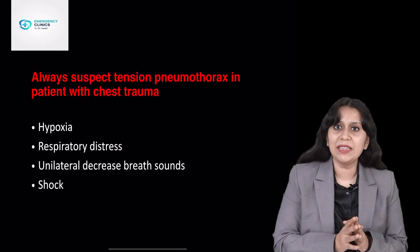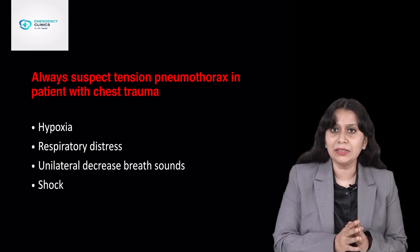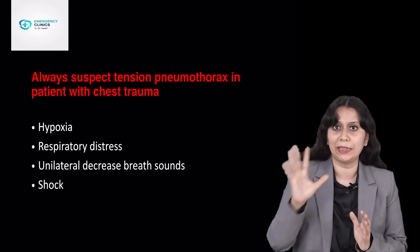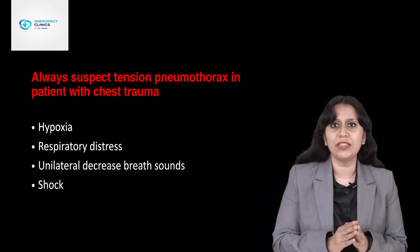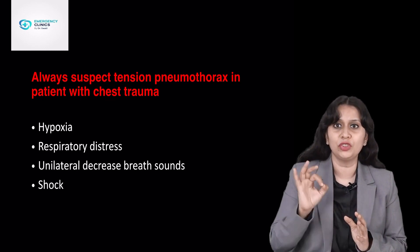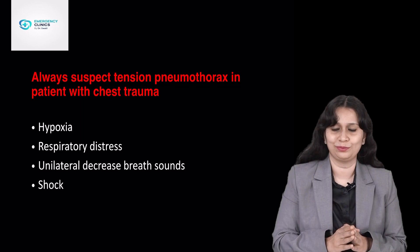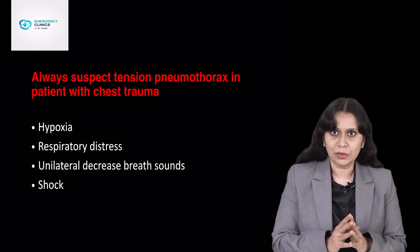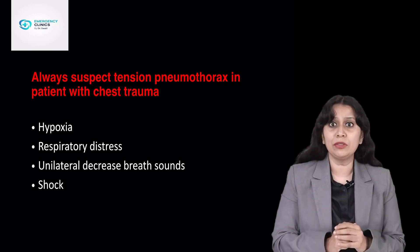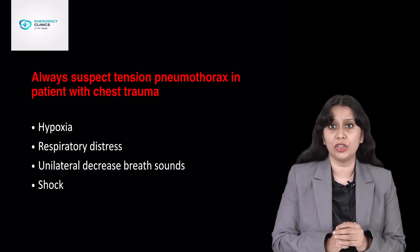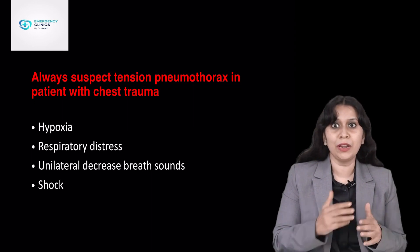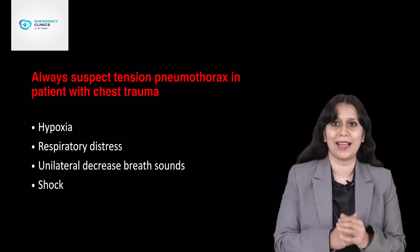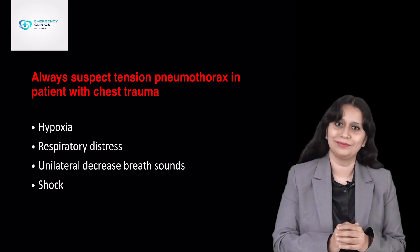So to summarize the management of tension pneumothorax: always suspect it in a chest trauma patient presenting with hypoxia, respiratory distress, unilateral decrease in air entry, and shock. The immediate management is needle decompression. The definitive management is insertion of a chest tube. I hope now you will be able to diagnose tension pneumothorax quickly and prevent your patient from going into cardiac arrest. Thank you.